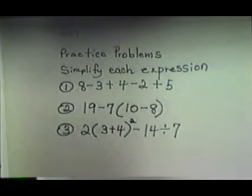Now I have some practice problems that I'd like for you to do. The directions are to simplify each expression and to come up with an answer. Okay, the first problem is 8 subtract 3 plus 4 subtract 2 plus 5. Second problem is 19 subtract 7, and then you have a parenthesis, 10 subtract 8, and the parenthesis closed. Third problem is 2 parenthesis, 3 plus 4, close parenthesis, then an exponent of 2 minus 14 divided by 7.